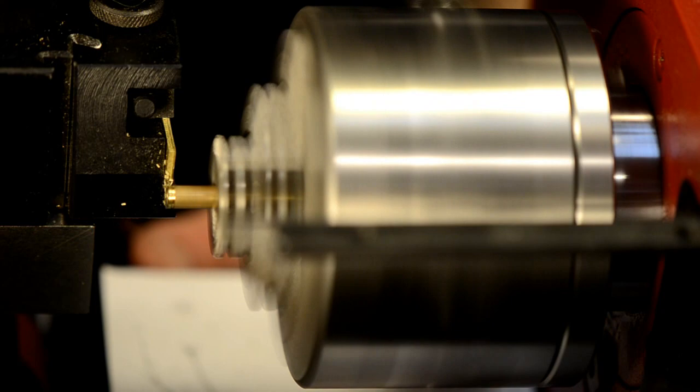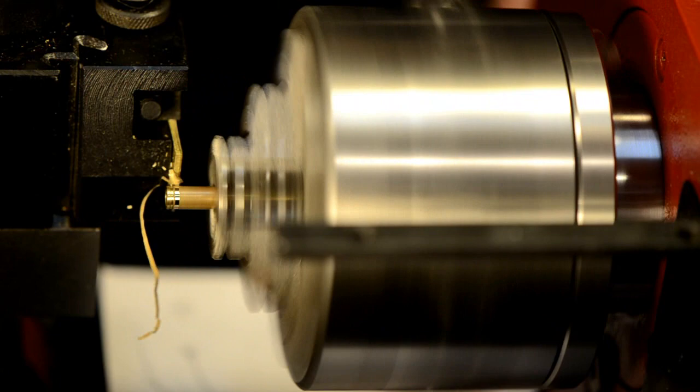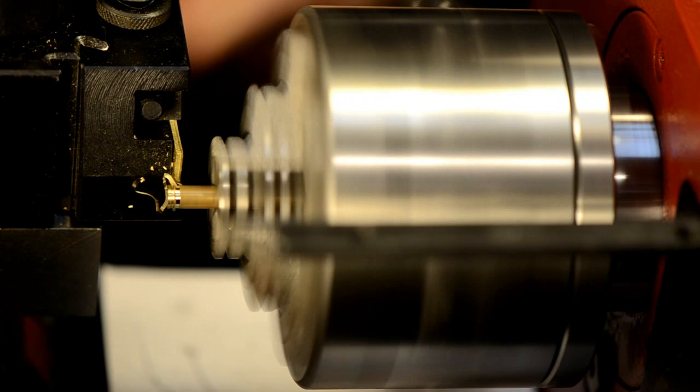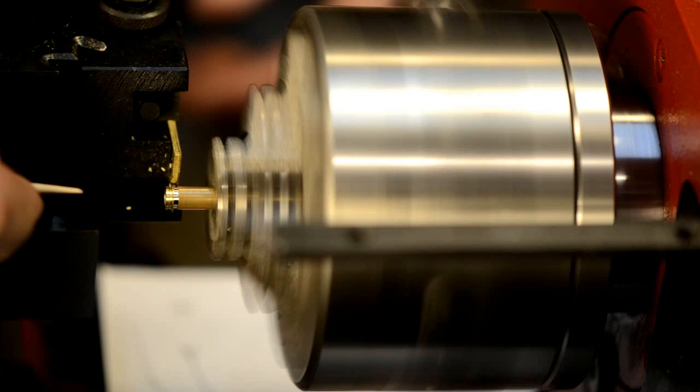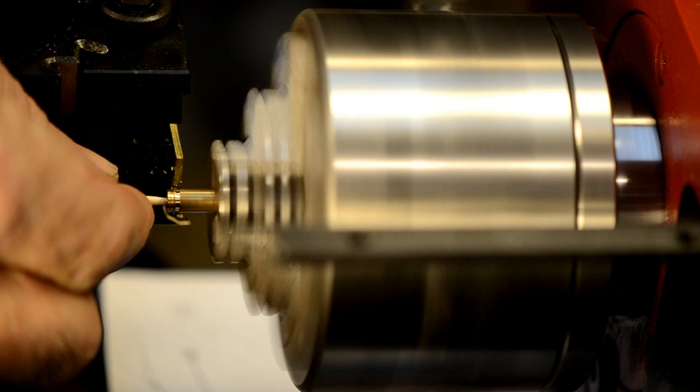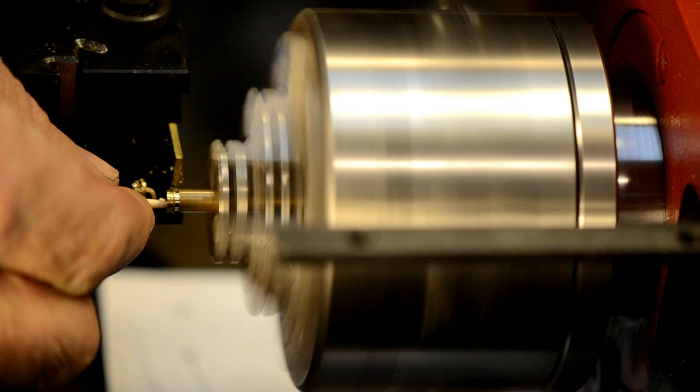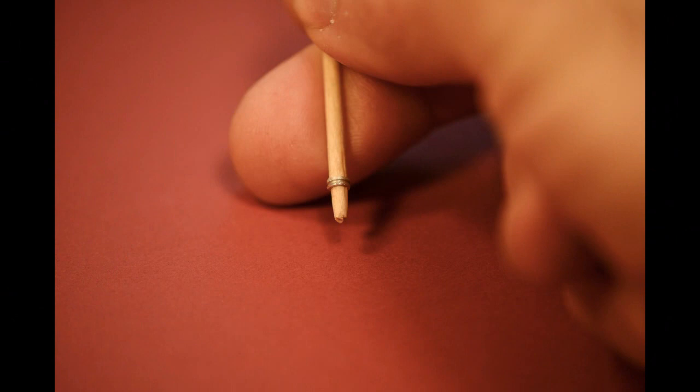Now the parting tool has gone into the tool holder and we're going to cut the part free from the lathe. It's a good idea to take something and catch the part with something that'll go inside the tubing. Here you see me using a toothpick. I'll take those final cuts and you'll see the part pop off the lathe right onto the toothpick just like that.